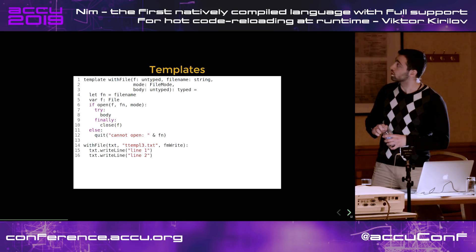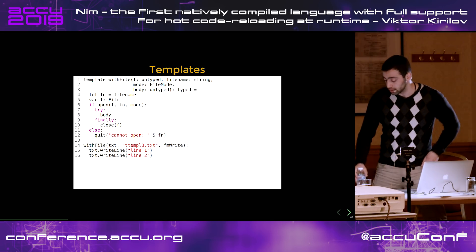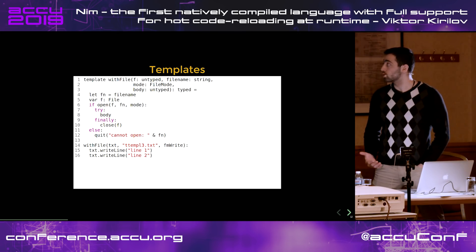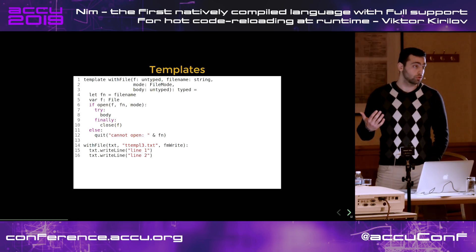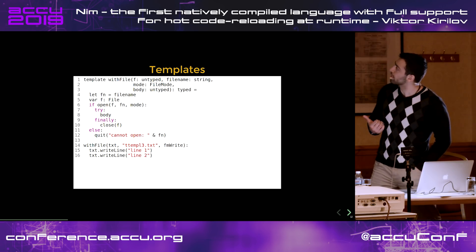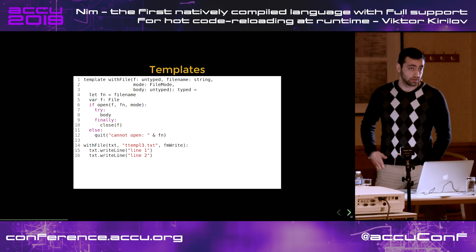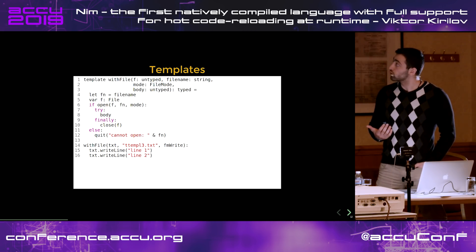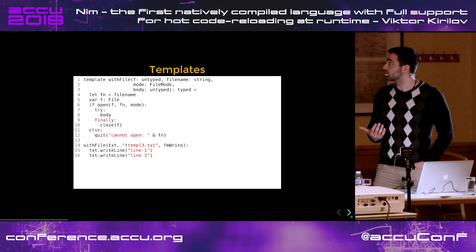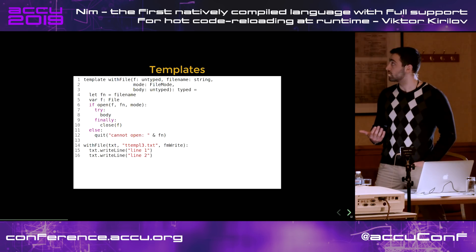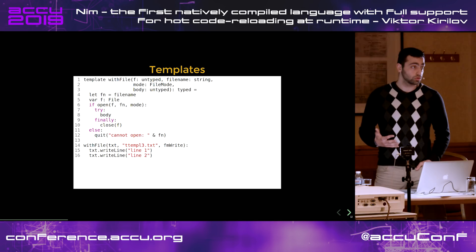Here we define a template called with_file, which is a helper template. At the bottom of the slide, we decide to open a file with write permissions called txt. If it succeeds, we continue with the block of code we've written. The template accepts the actual body of the code where we want to use the open file, and we wrap it around a try-finally block depending on whether the file can be opened. So it's really easy to define such a helper function — in this case, a template — and we can feed a whole block of code to it.